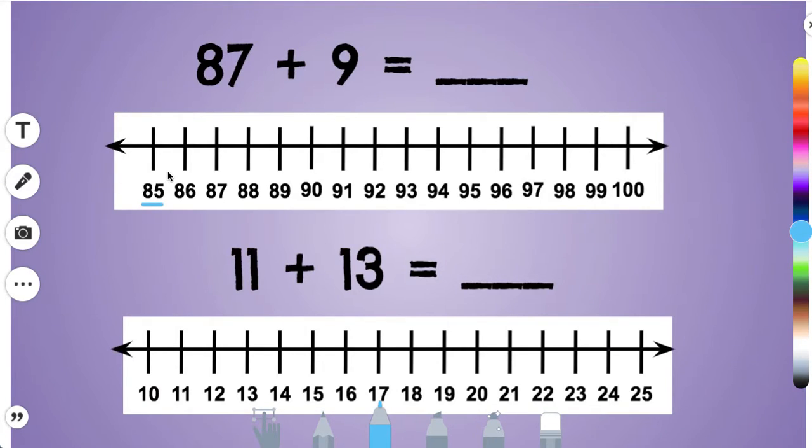To solve an addition problem using a number line, you're going to start with one of the numbers. This addition problem is 87 plus 9. I will start with 87.